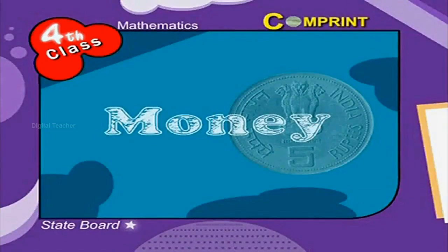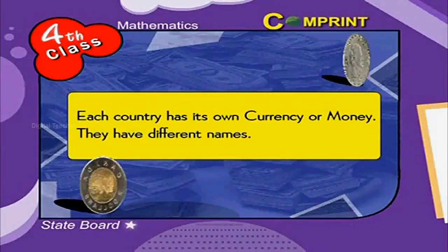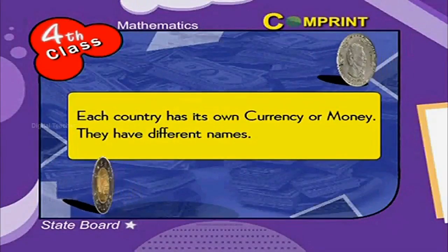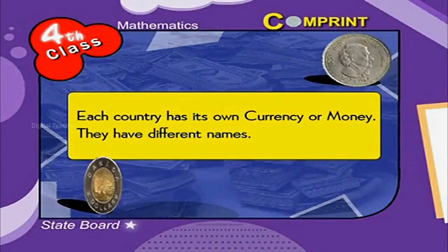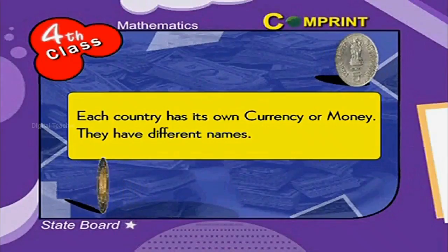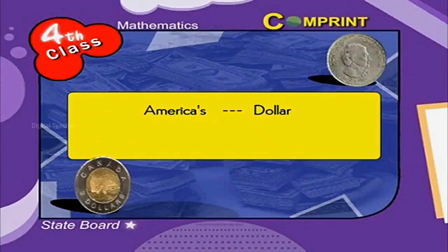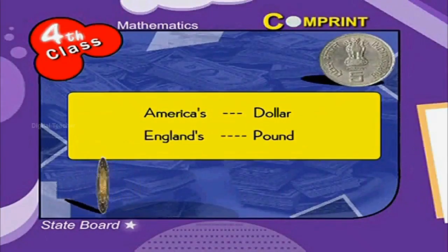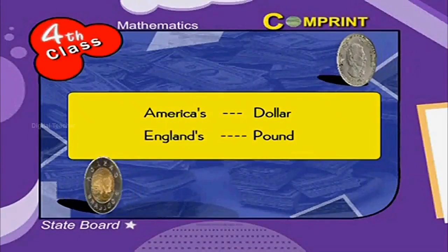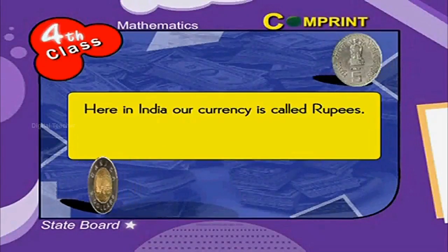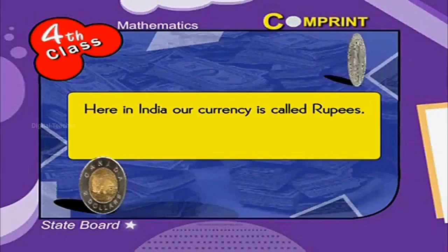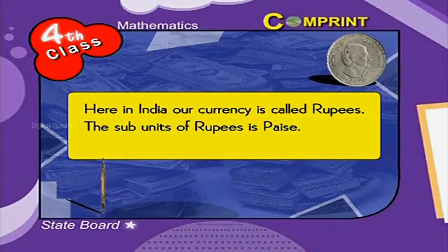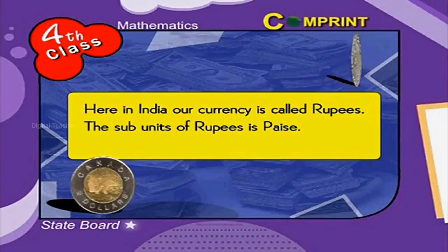Indian Money and Coinage. Each country has its own currency or money. They have different names, such as America's dollar, England's pound, etc. Here in India, our currency is called rupees. The subunits of rupees are paisae.